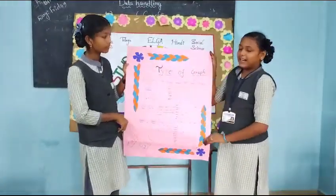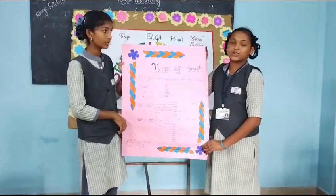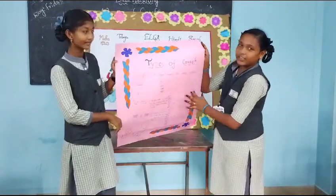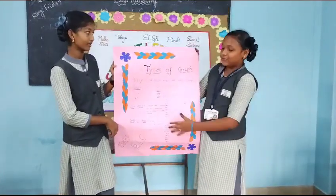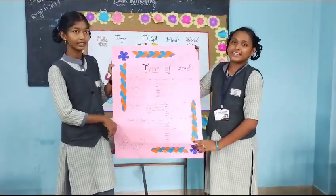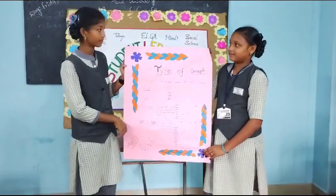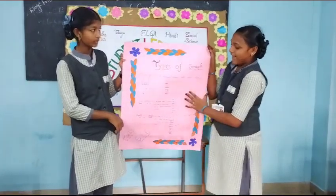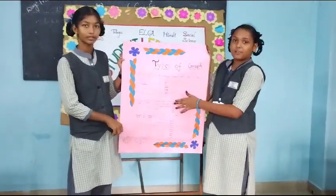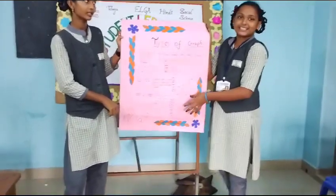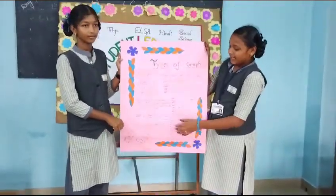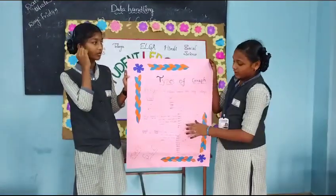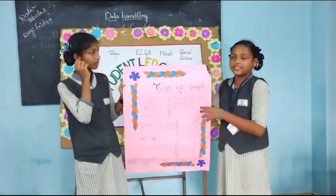Bar graph — the bar graph represents data using uniform bars arranged vertically and horizontally. Bar graph, can you give one example for that? The Y-axis shows the population, and the X-axis represents the years. For the year 2006, 104 is the population for that year.